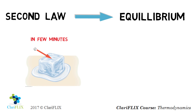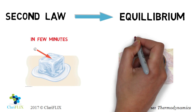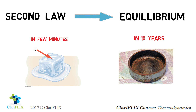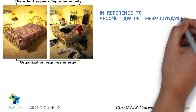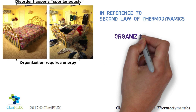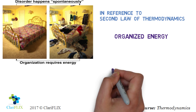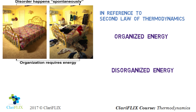In some cases, equilibrium is achieved very slowly — for example, rusting of an iron bar can take up to 10 years. In other words, everything in this world is leaning towards a disorder or disorganized state. In the context of the second law of thermodynamics, spontaneous conversion of an organized form of energy into a disorganized form of energy is possible.